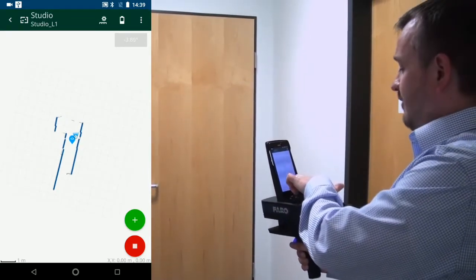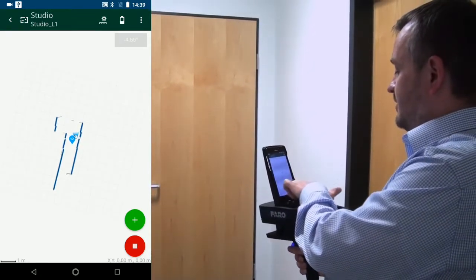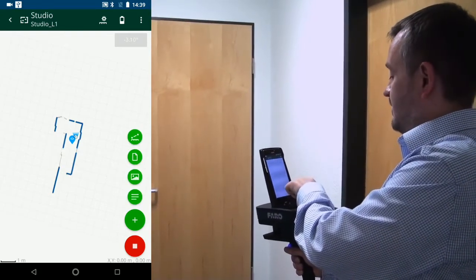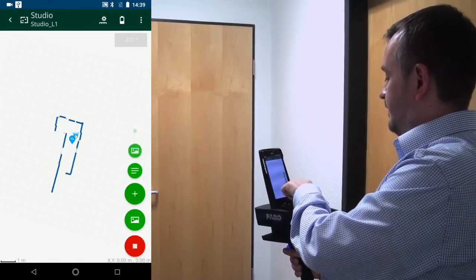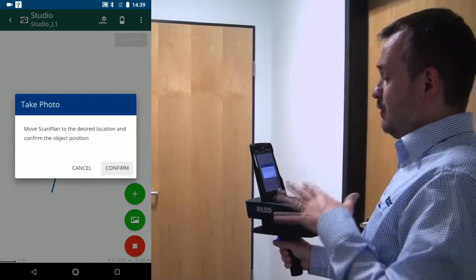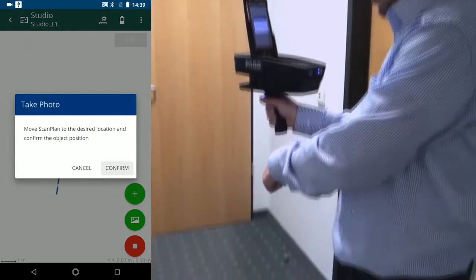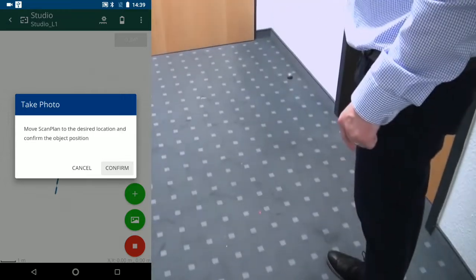The bottom right hand corner, I have a plus sign. I'm going to hit my plus sign. Then I've got an option for the picture. I'm going to press the picture button. And it's going to say, move the scanner plan to the position that I want. Well notice now that the laser has also come out from the bottom and that we talked about earlier.